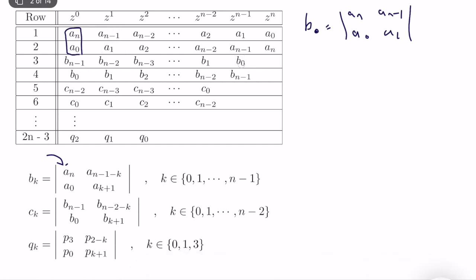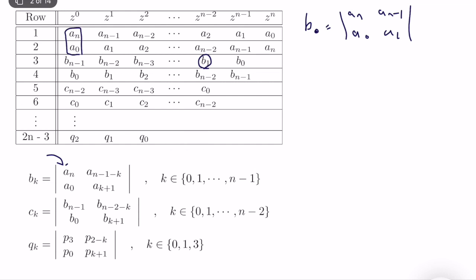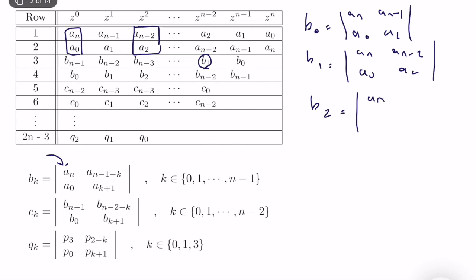Now let's compute b1. What we do is skip the column used in the previous computation and go to the third column. We form a new matrix and compute its determinant: b1 equals the determinant of an, a0, a(n-2), a2. Similarly, b2 equals the determinant of an, a0, a(n-3), a3, and it continues like that. Once you've computed all of the b's, you fill the table and move on to c.